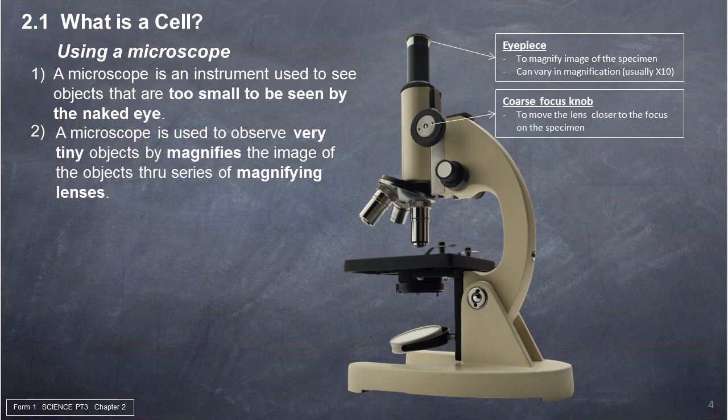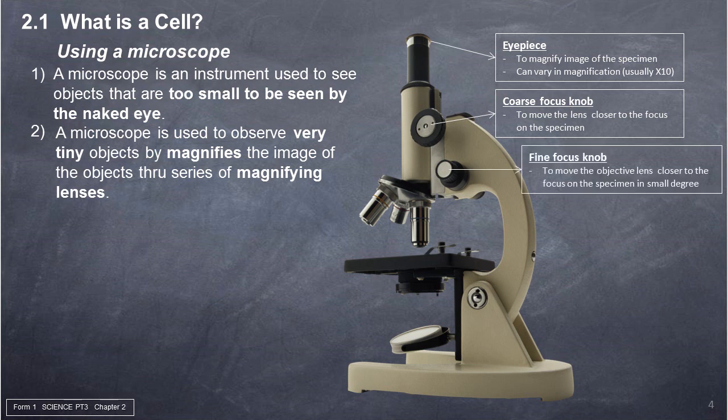7. Coarse focus knob: to move the lens closer to focus on the specimen. 8. Fine focus knob: to move the objective lens closer to focus on the specimen in small degree. 9. Arm: to hold the microscope.